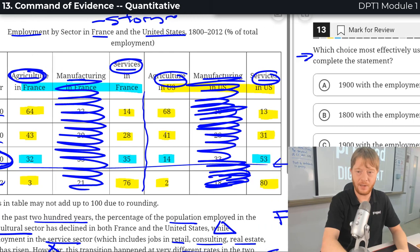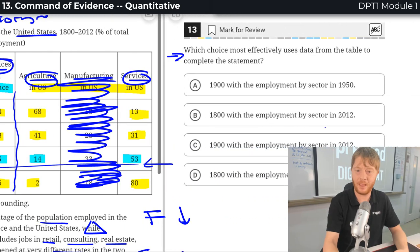So 1950 is my rough answer. And I'm done because I only see it in A and I circle A.